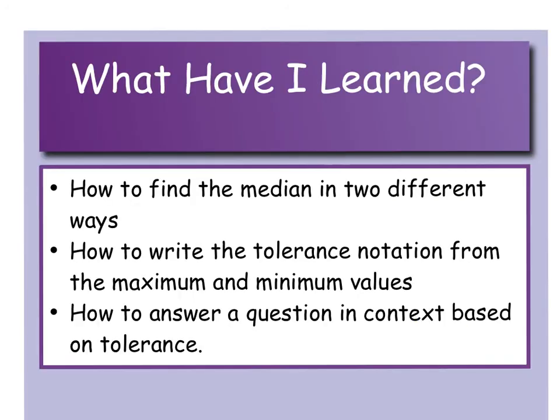Okay, so what have I learned? Well, we've learned how to find the median in two different ways: by adding and halving, or by finding the jump between the two numbers, halving it and then adding it or taking it away. That's another way of finding the middle. And then some of you just find the middle by looking at it. With some numbers, it's really simple. We've learned how to write the tolerance notation from the maximum and minimums, and then we've learned how to answer a question in context based on tolerance. What they can also do at the end of these questions is, once they've asked you to write the tolerance notation, they can ask you what are acceptable values. But you could have done that using the maximum and minimum anyway. But anyway, thanks for watching.